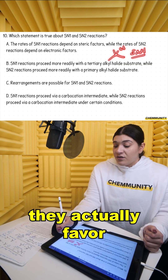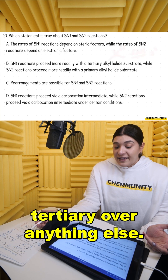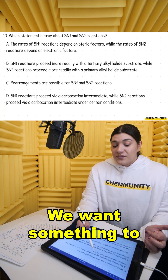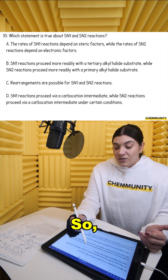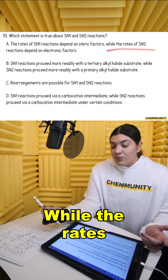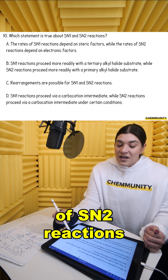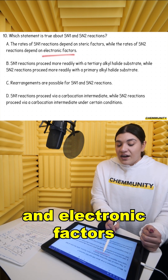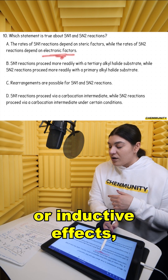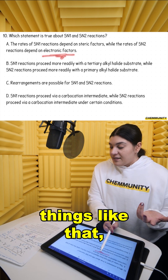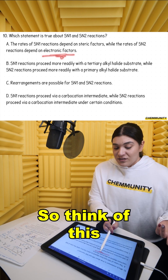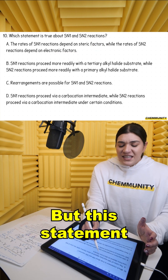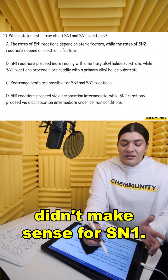Well, remember, SN1 reactions actually favor tertiary over anything else, so that doesn't really make sense. We want something to be bulky — we want something to be tertiary. While the rates of SN2 reactions depend on electronic factors, and electronic factors are talking about resonance or inductive effects — anything within those bonding electrons. Think of this as electrons, think of this as steric hindrance. But this statement didn't make sense for SN1, so that's a no.